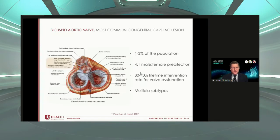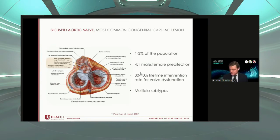Most of the audience is familiar with this clinical entity. It's very common — the most common congenital cardiac lesion, affecting 1% to 2% of the population, more common in males than females in about a 4 to 1 ratio. These valves are not normal at birth, and these patients have a high risk for developing valve dysfunction. Up to 30% to 40% of patients over their lifetime will have valve dysfunction.